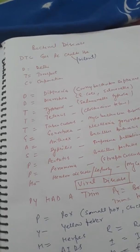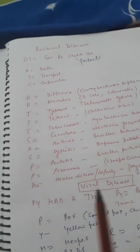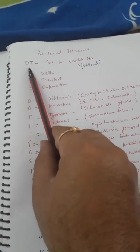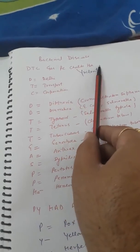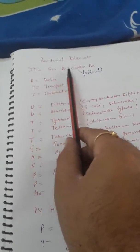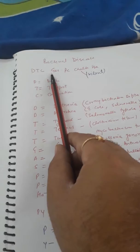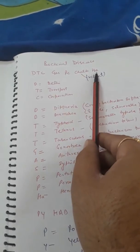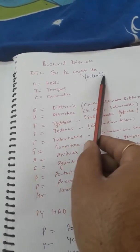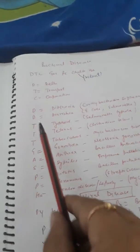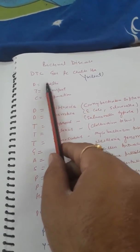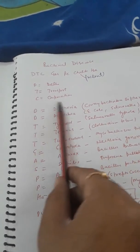We discuss about the bacterial diseases. Bacterial diseases ka funda kya hai, dekho DTC gas pe chalta hai. DTC joh Delhi mein joh hai, joh buses aur automobiles hai woh gas pe chalta hai. Toh iska bahut yaad karne ka tarika hai aapke paas - Delhi Transport Corporation DTC, gas pe chalta hai.